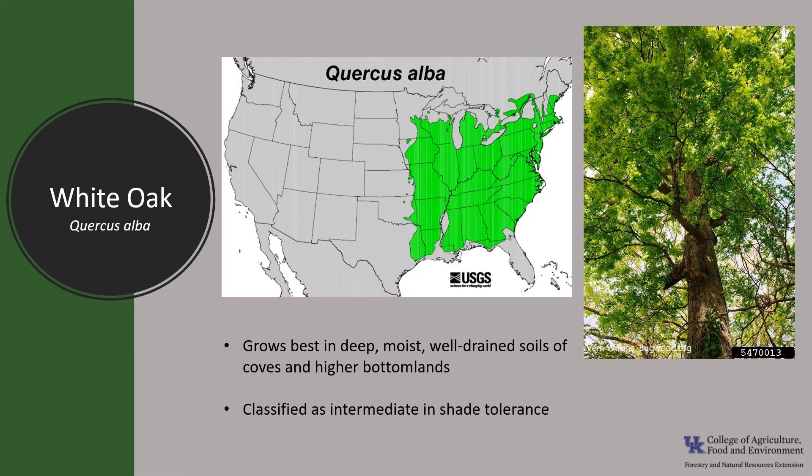White oak is generally classed as intermediate in shade tolerance. It's most tolerant in youth and becomes less tolerant as the tree becomes larger.